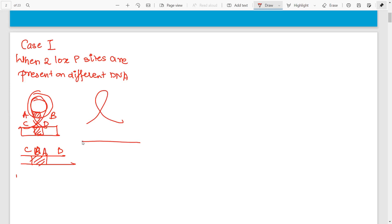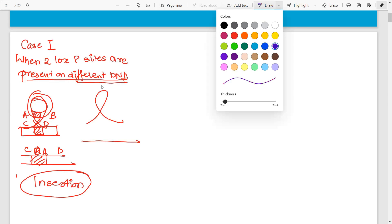When you straighten it, you will see that these genes have been inserted. There will be an insertion when the LOXP are present on different DNA. This case is not frequently asked in CSIR NET.